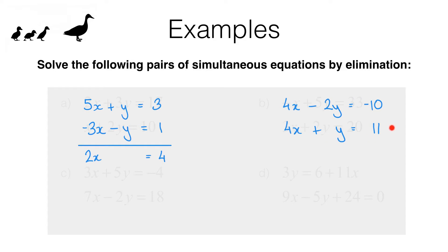Now this second pair of equations is a little bit more advanced. If we try adding these equations together, what we get on the left hand side is 8x minus y. We haven't eliminated either x or y — they're both still in the equation, so this needs a bit of adjusting. However, this one is quite easy to adjust because we've got a 4x and a 4x, so all we need to do is multiply one of these equations through by negative 1.